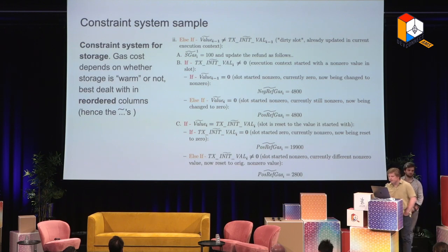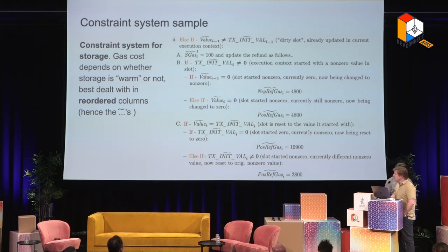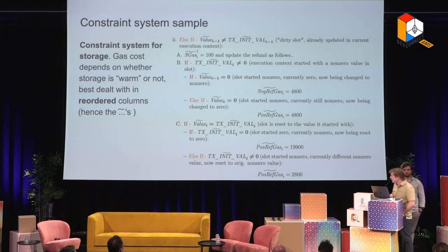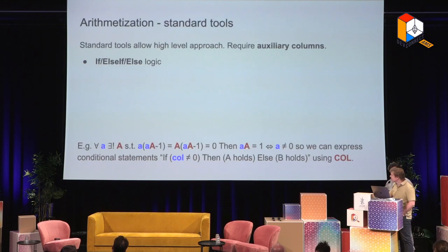Now let's say a few words about constraint systems. Our spec is written in a very high-level language and we express everything in terms of readily understandable branching behavior — ifs and elses, this kind of stuff. This snippet represents part of the spec that imposes certain gas costs associated with storage operations. You will also notice tildes pretty much everywhere, which relates to our ability — or necessity — to sometimes reorder columns, because some constraints are best expressed in a different order.